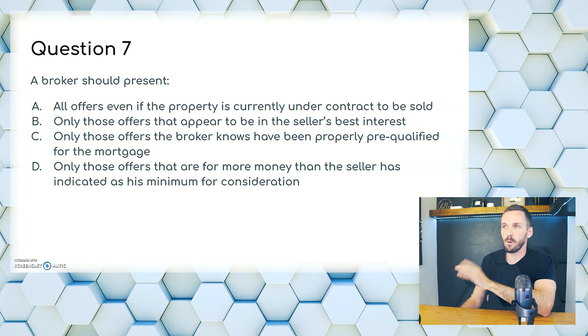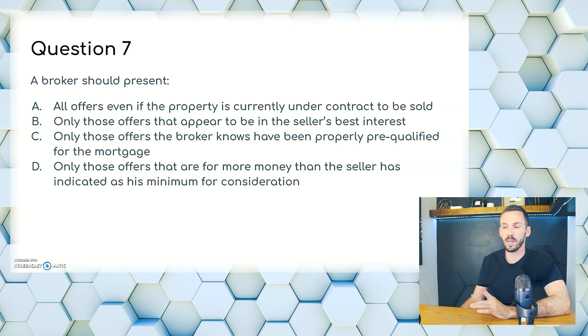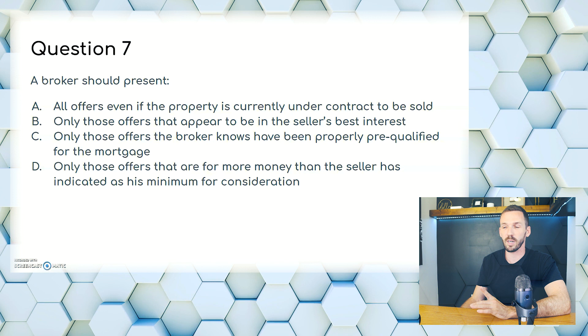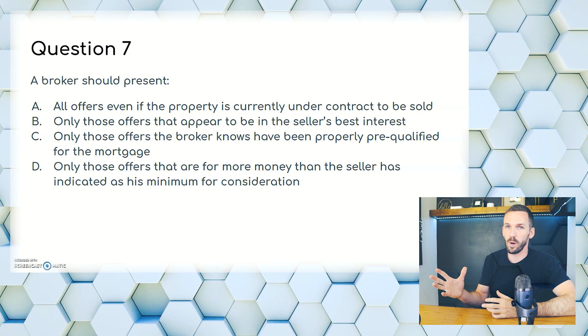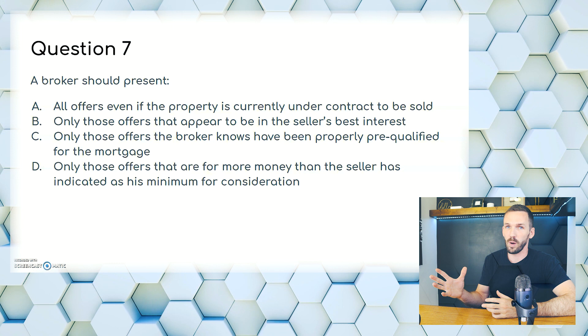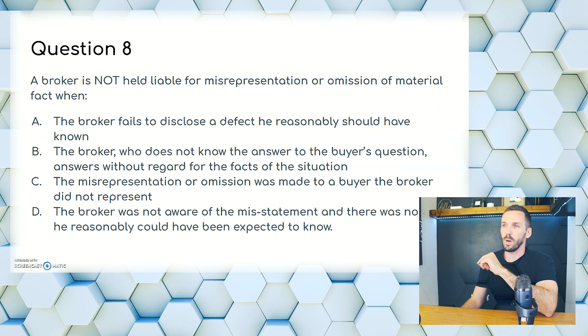Question 7. A broker should present: A, all offers even if the property is currently under contract to be sold; B, only those offers that appear to be in the seller's best interest; C, only those offers the broker knows have been properly pre-qualified for the mortgage; or D, only those offers above the seller's minimum. Not only must all material facts be disclosed, so do all offers — every single one, even a dollar offer. You do not pick and choose. Even lowball offers need to be shown. The answer is A.